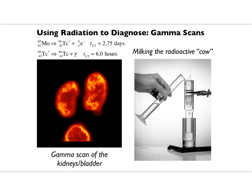You can also use radiation to diagnose diseases. One way is a gamma scan, and the primary way this is done is using technetium. Technetium does not occur in nature — it only occurs when it's been created. Hospitals get molybdenum-99 from nuclear medicine vendors; molybdenum-99 decays with a half-life of 2.75 days into technetium-99. Technetium-99 is an excited state that decays with the emission of a gamma ray with a half-life of six hours.